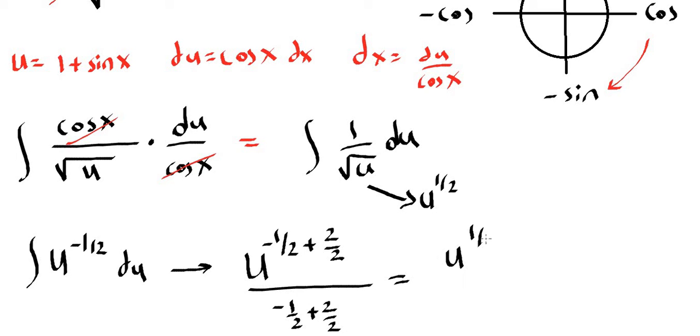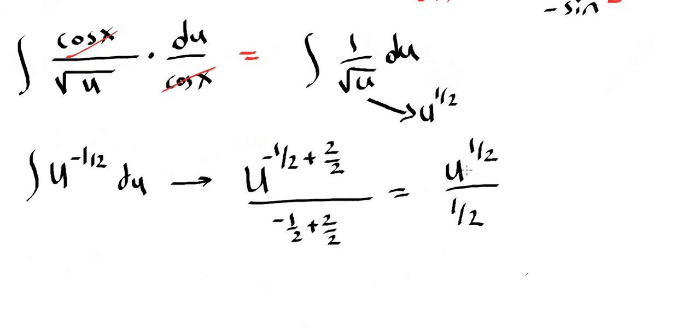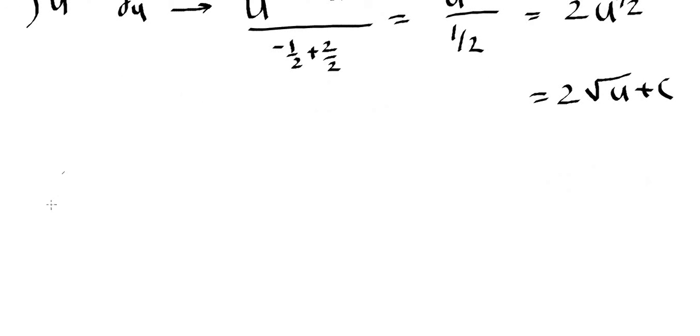So we obtain u to the 1 half over 1 half. Dividing by 1 half is multiplying by 2. So 2u to the 1 half which is 2 square root of u plus c. And you can bring u back. Our u was 1 plus sine of x plus c. So this is our answer.